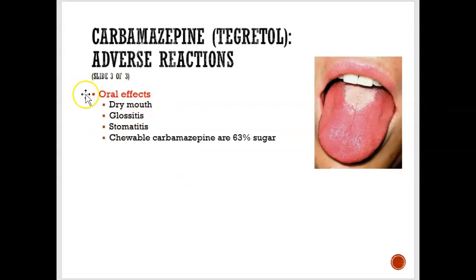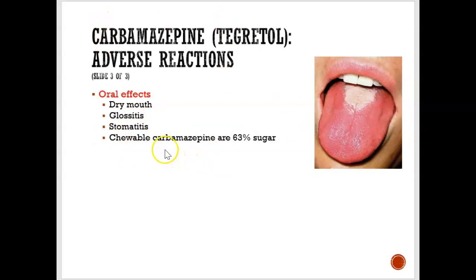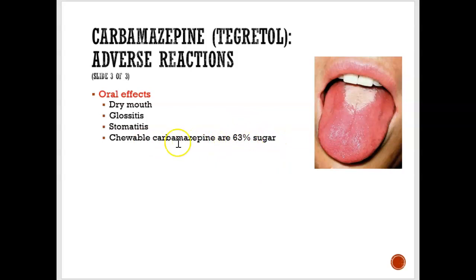The oral effects of carbamazepine are particularly relevant. It can cause xerostomia (dry mouth) and glossitis, where the tongue becomes red and inflamed. For children who take the chewable form of carbamazepine, the sugar content is extremely high, and it's often taken four times a day. It is important to educate them on proper brushing and to have them come in regularly for cleanings.